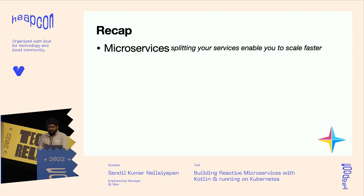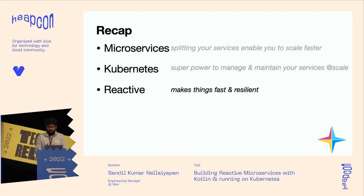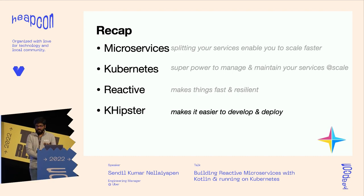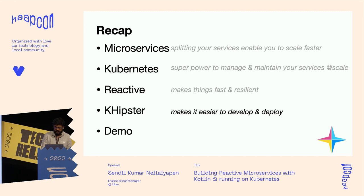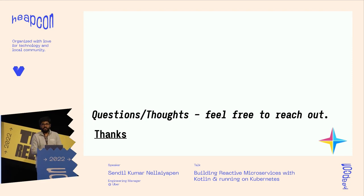To summarize: we've seen what microservices are and how splitting a big service into smaller chunks helps; Kubernetes and how it helps you scale and manage services; reactive and how it makes things faster and more resilient; and KHipster and how it makes development easier and faster. Feel free to reach out if you have any questions. Thanks a lot for your time.